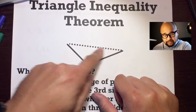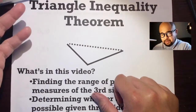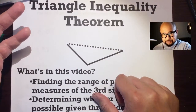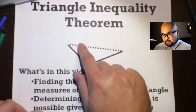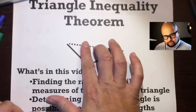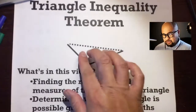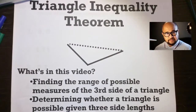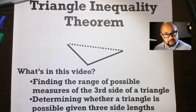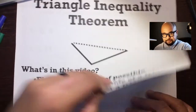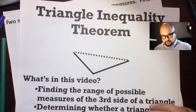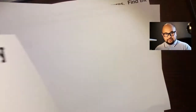What's the maximum length of this third side, and what's the minimum length of this third side? I'm going to show you that, and then we're going to find the range of possible measures of this third side — what's the shortest it could be and what's the longest it could be. And then, given three side lengths, we're going to determine if those three side lengths can actually create a legitimate triangle. On to the Triangle Inequality Theorem.